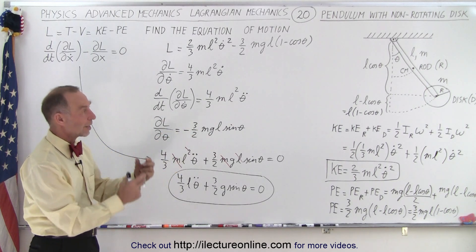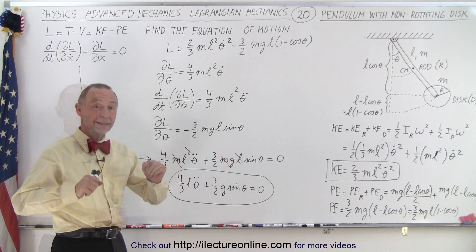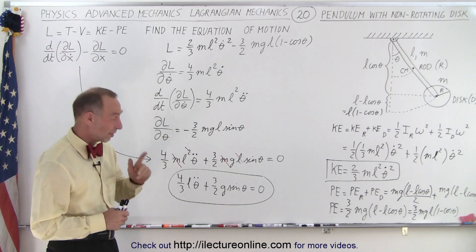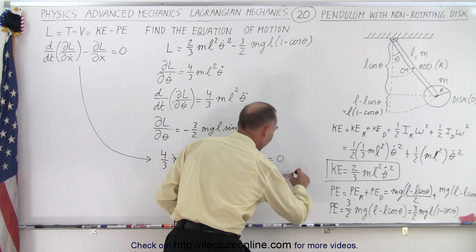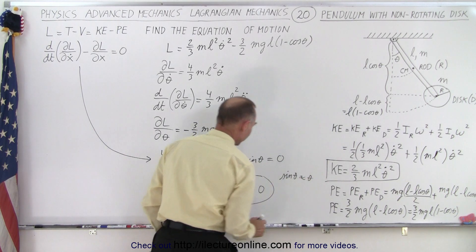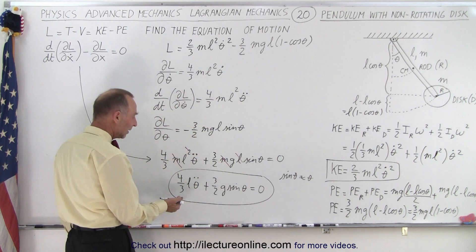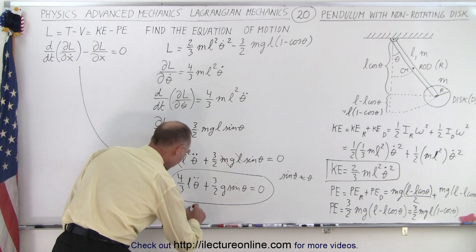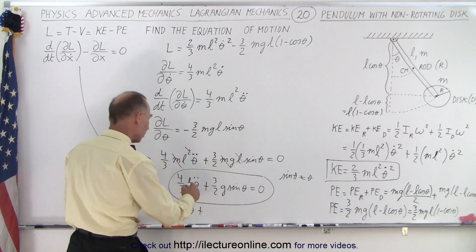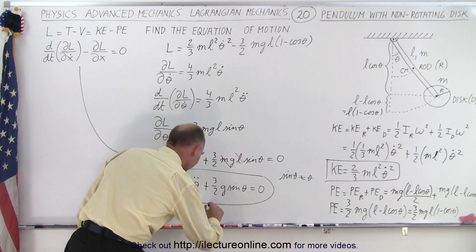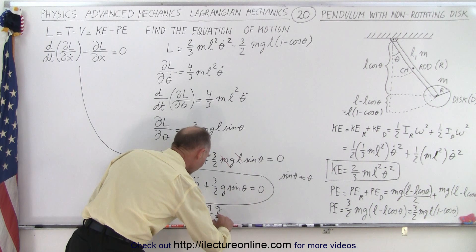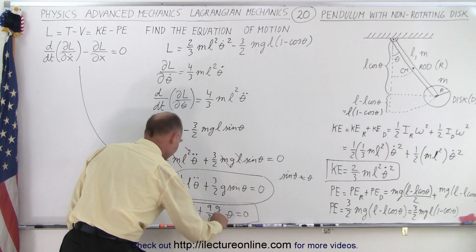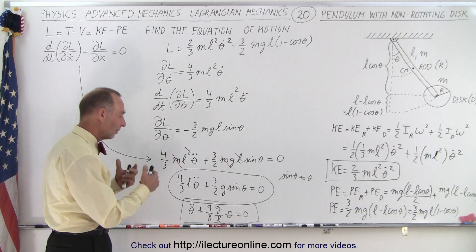One additional note: we assumed small oscillations. For small oscillations, sine theta is approximately equal to theta, so we can replace sin theta with theta. Dividing both sides by L and multiplying both sides by 3/4, we get: θ̈ + (9/8)(g/L) theta = 0.